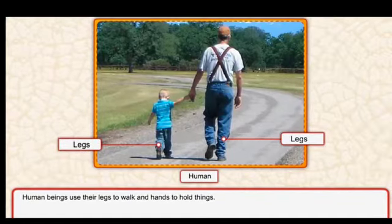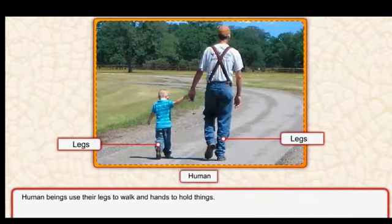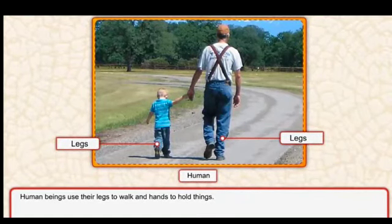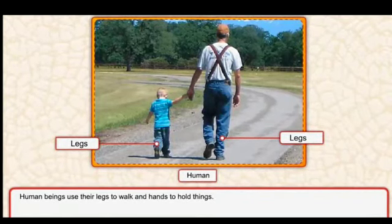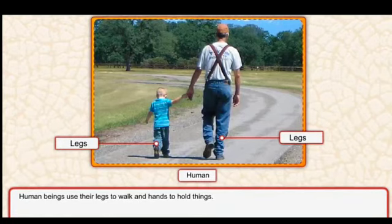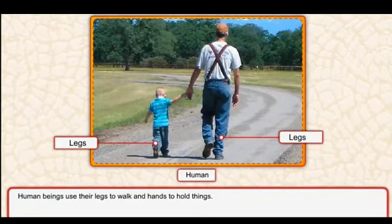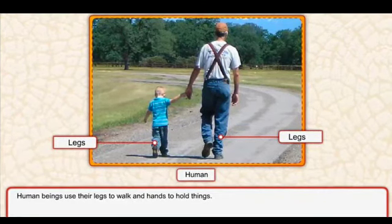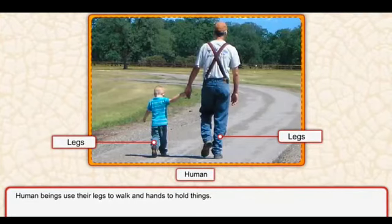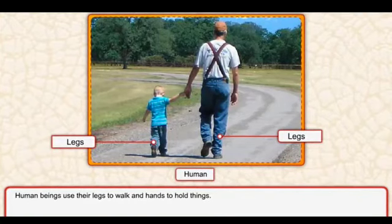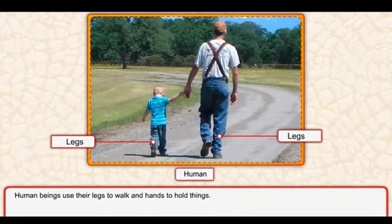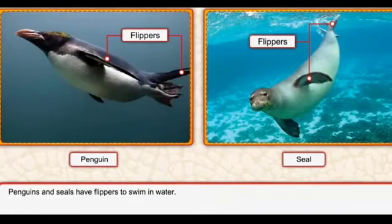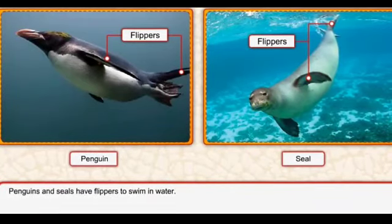Human beings use their legs to walk and hands to hold things. Hum insaan jo hain hum apni legs ko istemal karte hain chalne ke liye aur apne haathon ko istemal karte hain kisi bhi cheez ko hold karne ke liye, matlab pakadne ke liye.